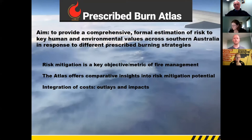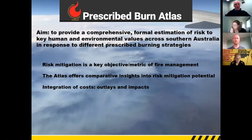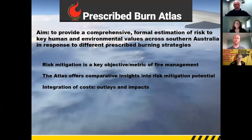The Atlas delves into costs and attempts to provide some estimation of how much any particular strategy is likely to cost and what the cost impacts are — particularly how those impact costs may change as a function of the treatment rate and where you put those treatments in the landscape. It provides an integration of both the outlays and the savings and the impact costs that may ensue from a particular choice. There's a lot of pressure on people to justify the cost-benefit and cost-effectiveness of what they do.